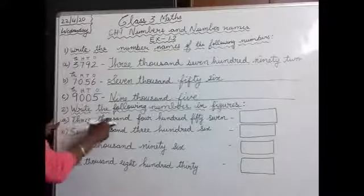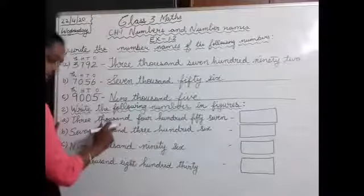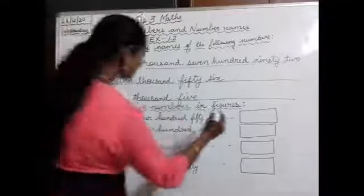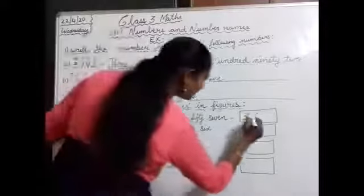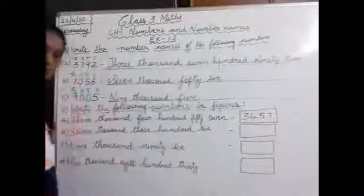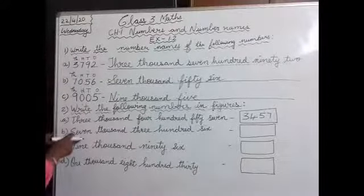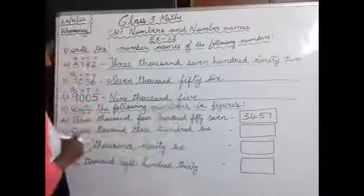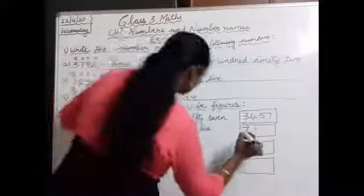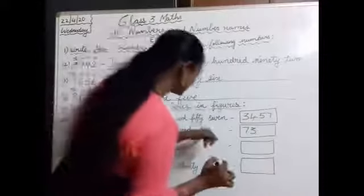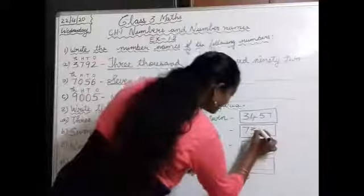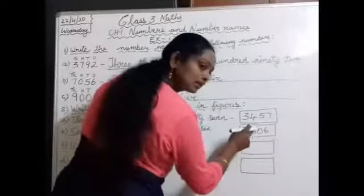First, three thousand four hundred fifty-seven. 3457 — you have to write the figure for this. 3,400 — 457 — 57. Next, seven thousand three hundred six, 7306. 6 is in ones place but in tens place nothing is given, so we will write 0, then 6. 7306.